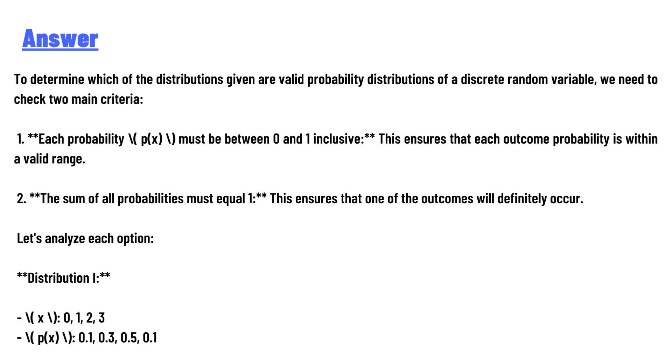First, each probability must be between 0 and 1 inclusive. This ensures that each outcome probability is within a valid range. Second, the sum of all probabilities must equal 1. This ensures that one outcome will definitely occur.